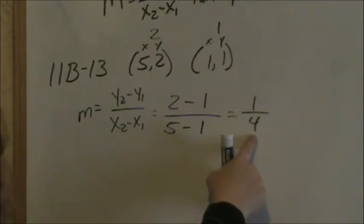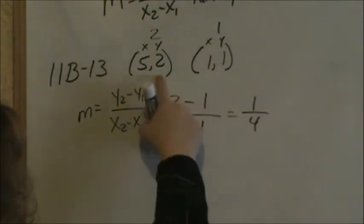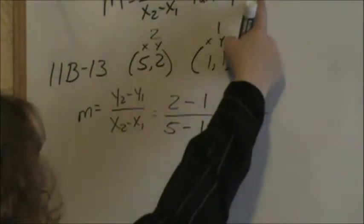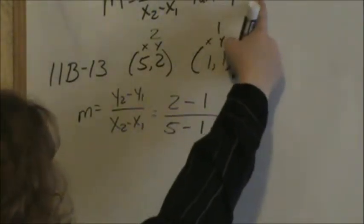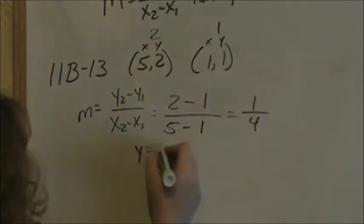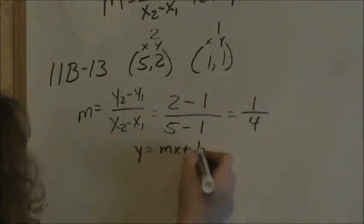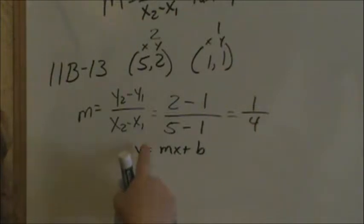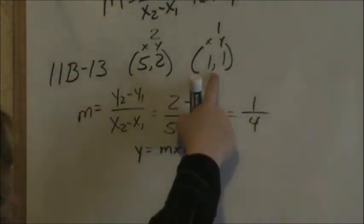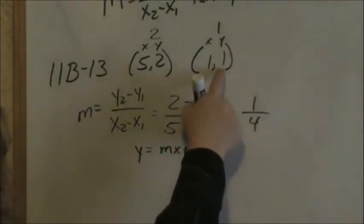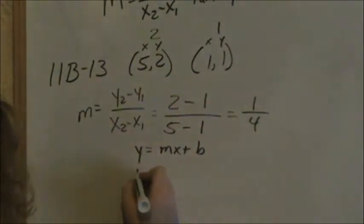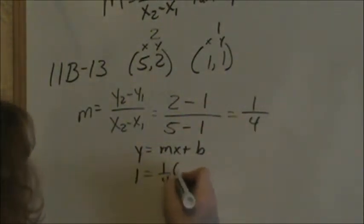Now we need to calculate the y-intercept. We take our slope and one of our points and put it back into y equals mx plus b. So we have y equals mx plus b, we get our x and y value from one of our points, I'm going to use 1, 1. So putting in 1 for my y value, then my slope m is 1 fourth, and then my x value is 1 plus b.